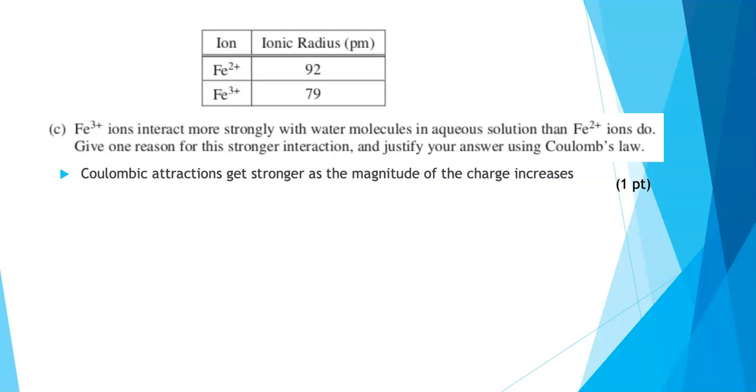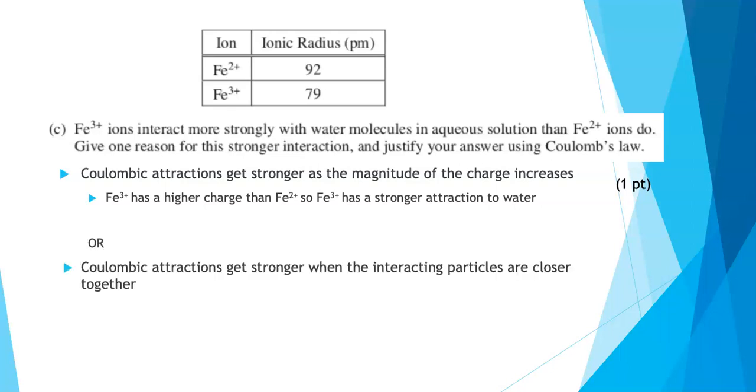Since iron 3 plus has a higher charge than Fe2 plus, iron 3 plus will have a stronger Coulombic attraction to the water. So that would be perfectly fine in terms of credit. There is another way to answer this question. You could talk about the distance dependence. The closer the particles are, the stronger the attraction. When the particles are farther away, the Coulombic attraction goes down. Since iron 3 ion has a smaller radius than iron 2 plus, the iron 3 ion can get closer to the water molecule, and that would give it a stronger Coulombic attraction. So either one of these is sufficient.